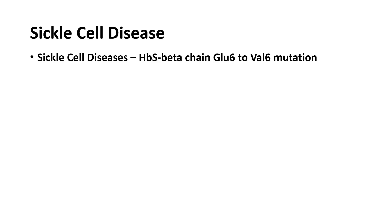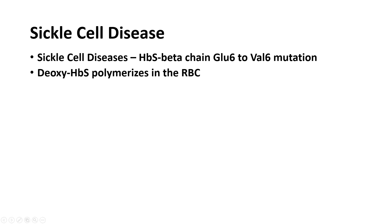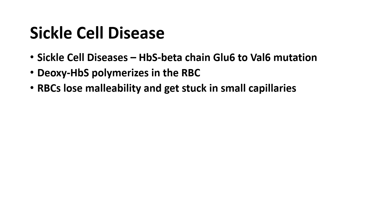I teach about sickle cell disease. Sickle cell disease involves hemoglobin HbS, in which the beta chain glutamic acid residue 6 has been mutated to valine. That mutation results in the fact that deoxyhemoglobin S polymerizes inside the red blood cells.